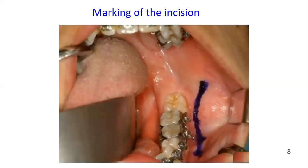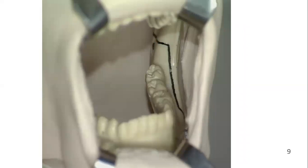After exposure, the procedure starts with three corticotomies. Here you can see the first cut on the buccal side, the second cut, and the third cut.